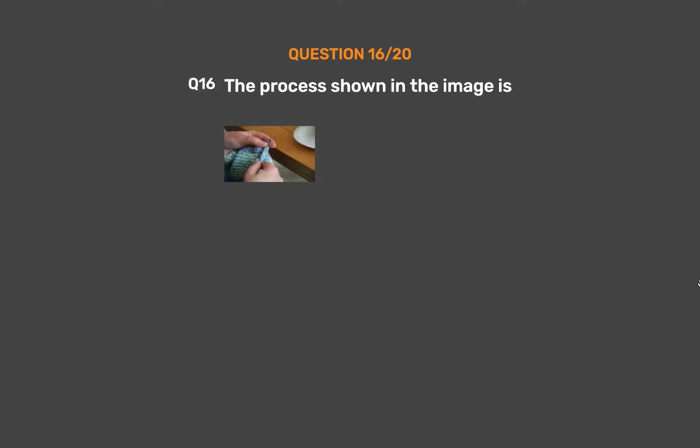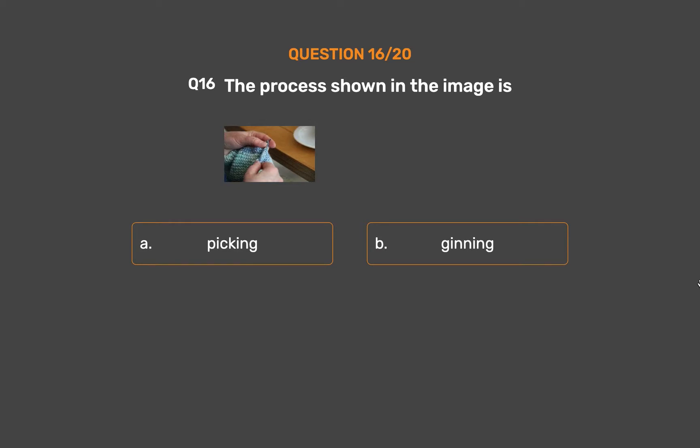Question number 16. What is the process shown in the images? Option A, Picking; Option B, Ginning; Option C, Sewing; Option D, Knitting.